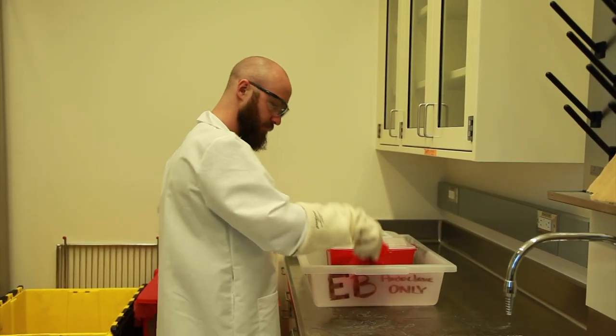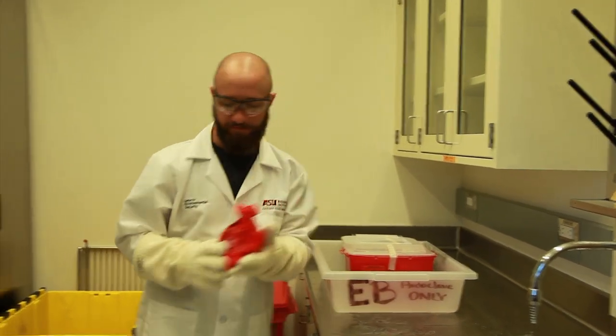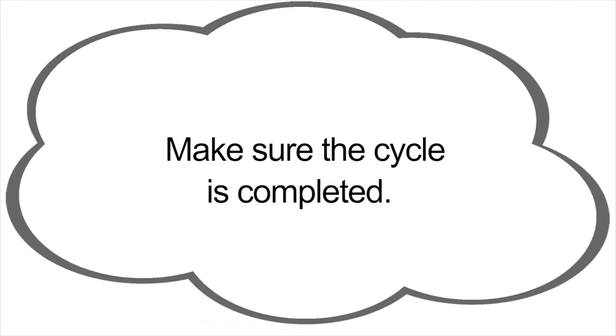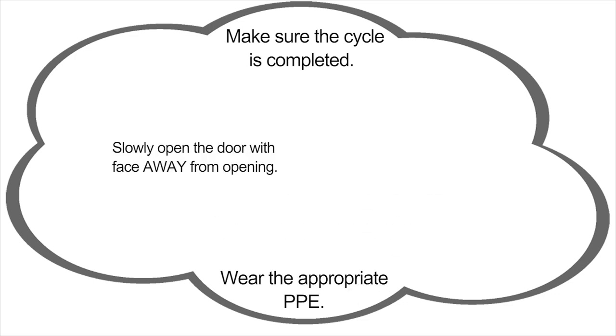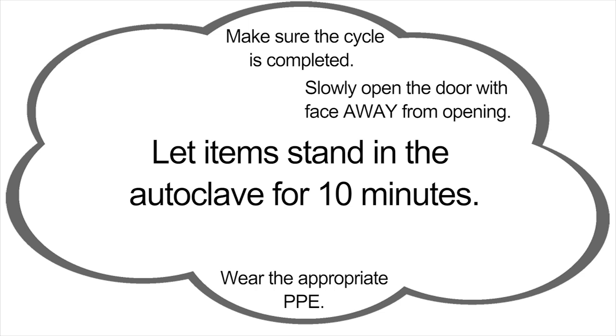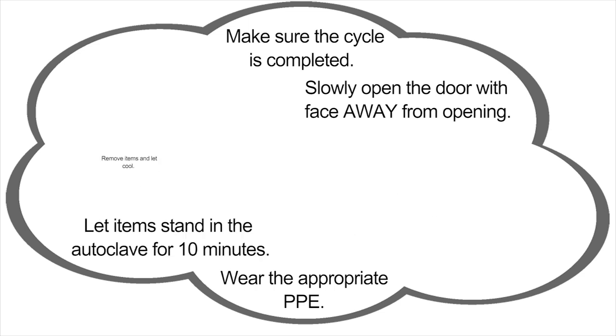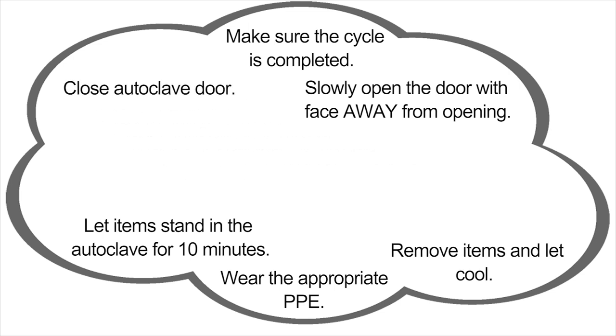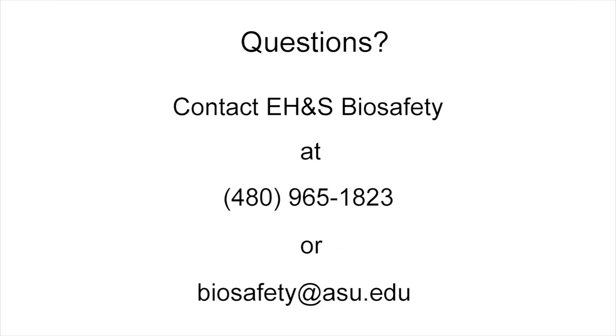If waste was in the autoclave, note that all biohazardous material must be processed according to the ASU guidelines. To summarize unloading an autoclave: make sure the cycle is completed. Wear the appropriate PPE. Slowly open the door with face away from opening. Let items stand in the autoclave for approximately 10 minutes. Cautiously remove items and let cool. Close autoclave door. Sign the autoclave logbook. Dispose of waste properly.